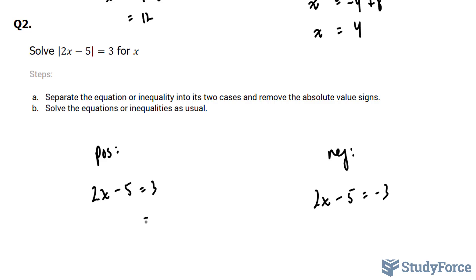Solving for x, we bring this over. 3 plus 5. Divide both sides by 2. 8 divided by 2 gives you 4.